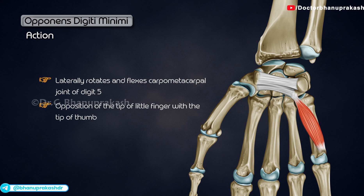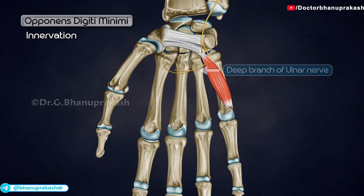and also causes opposition of the tip of the little finger with the tip of the thumb and deepens the hollow of the palm. It is innervated by the deep branch of the ulnar nerve.